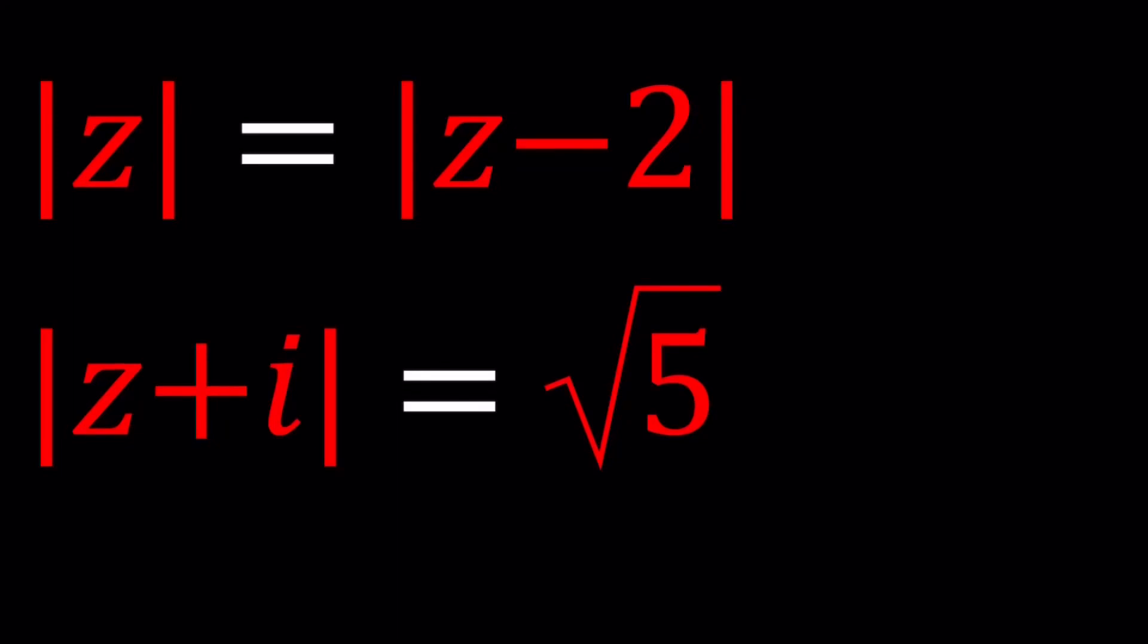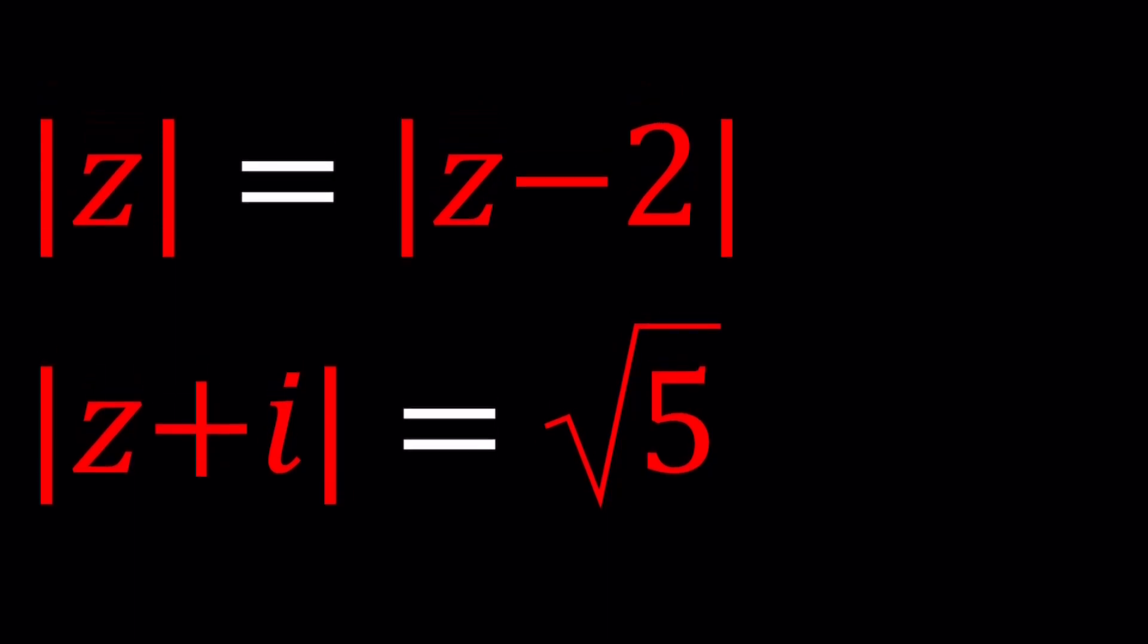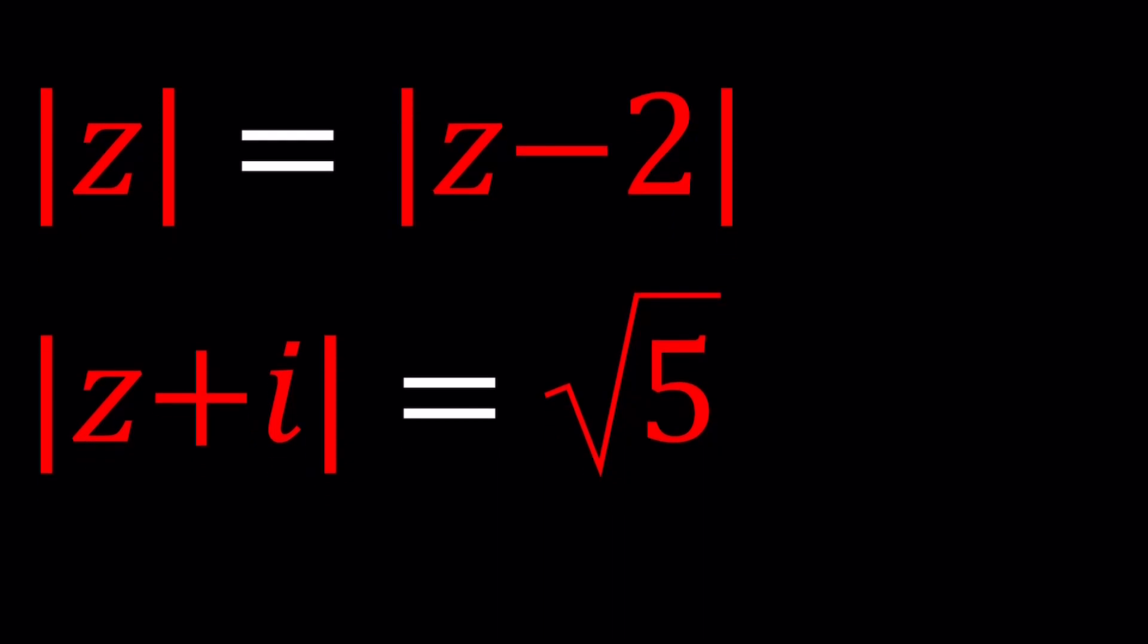Hello everyone, welcome to A plus B I. This channel is all about complex numbers, and in this video we're going to be solving a system of equations with absolute values. We have the absolute value of z equals the absolute value of z minus 2, and the absolute value of z plus i equals square root of 5. Remember, i is the number whose square equals negative 1, and z is a complex number that can be written as A plus B I.